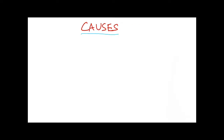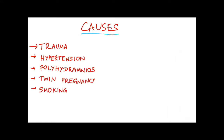The important causes of abruptio placenta are trauma, hypertension, polyhydramnios, twin pregnancy, and smoking. Polyhydramnios is a condition with excessive amniotic fluid. In polyhydramnios and twin pregnancy, the key cause is the sudden decrease in uterine pressure due to membrane rupture, leading to separation of the placenta. In hypertensive disorders like pre-eclampsia, abruptio placenta is very common.